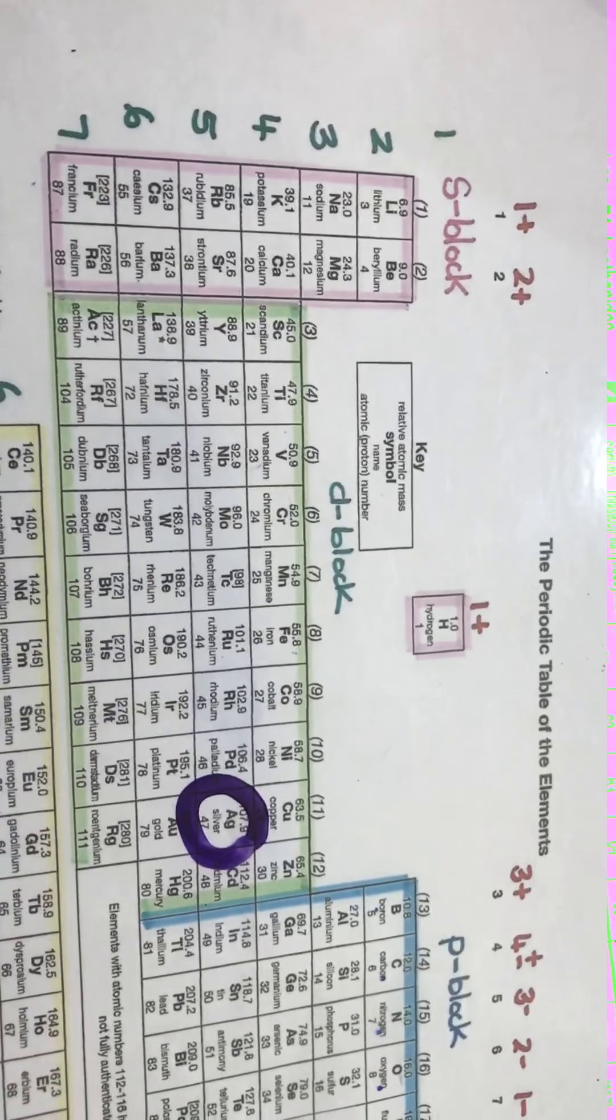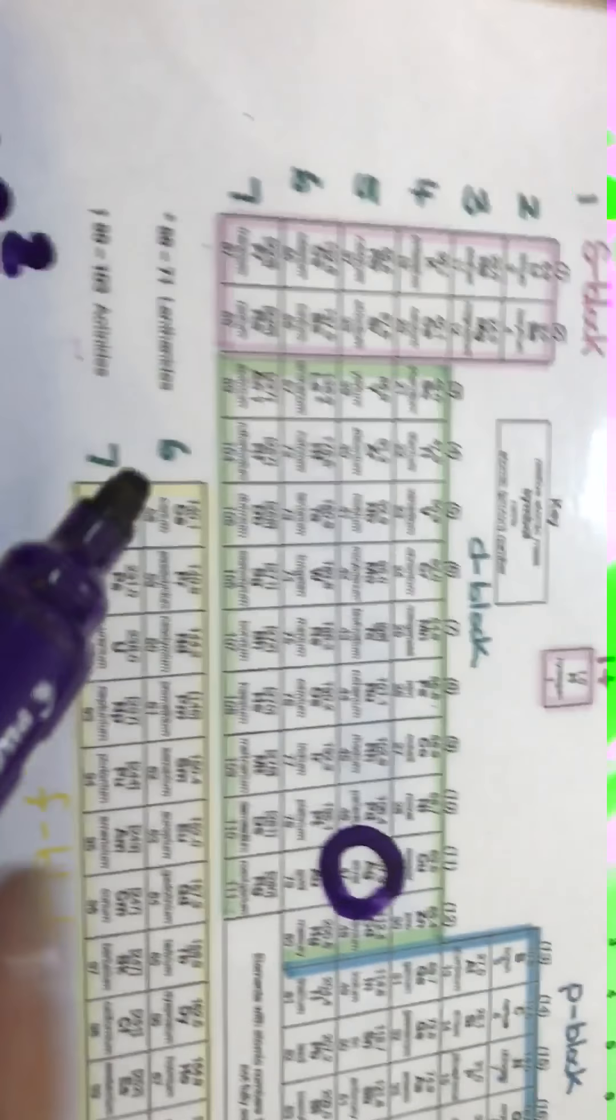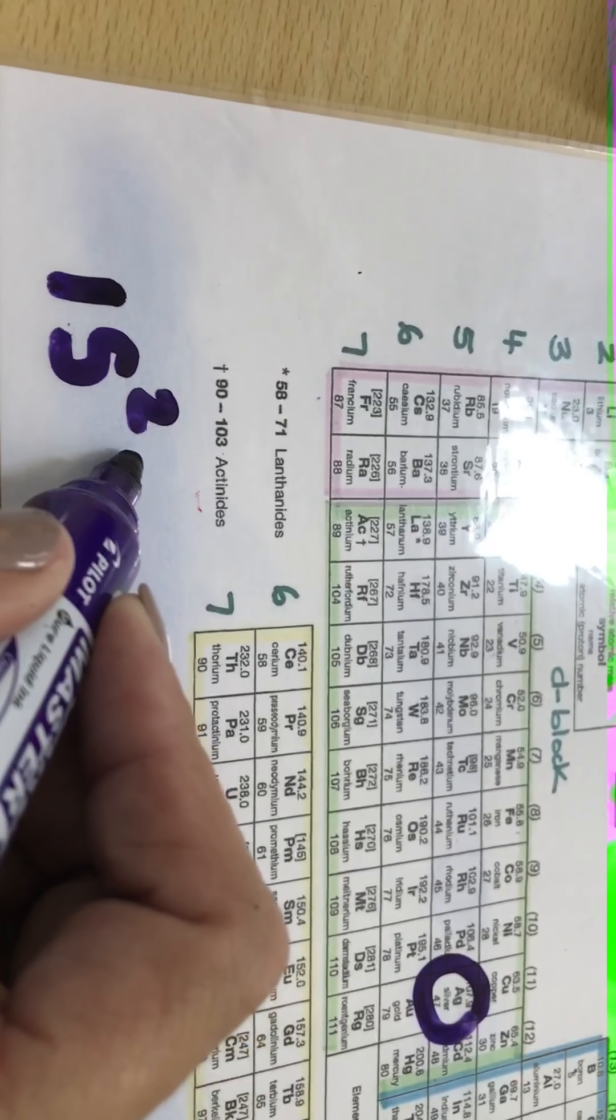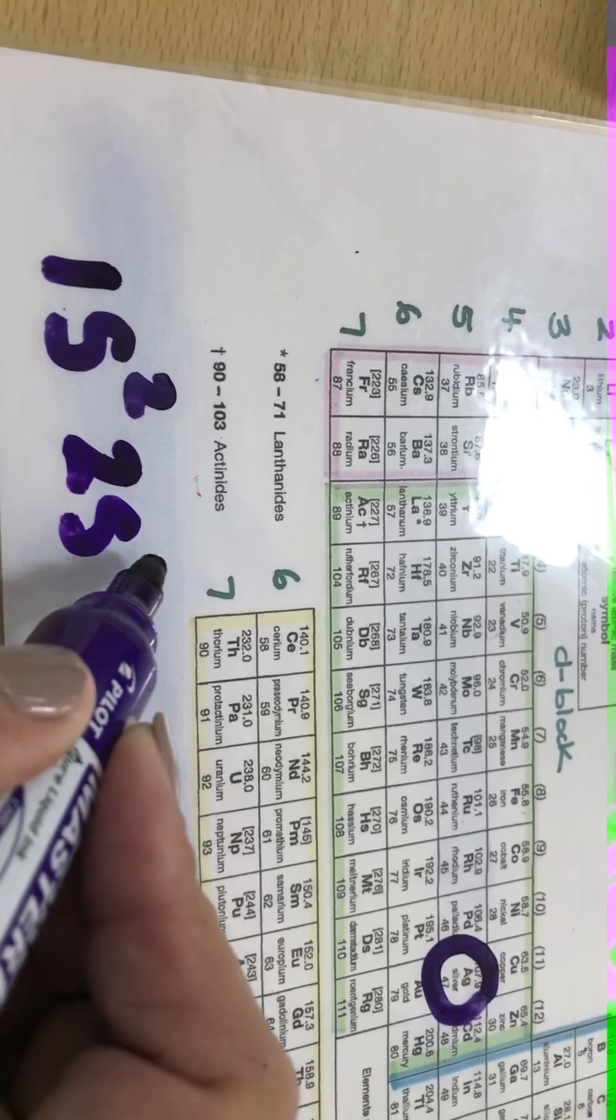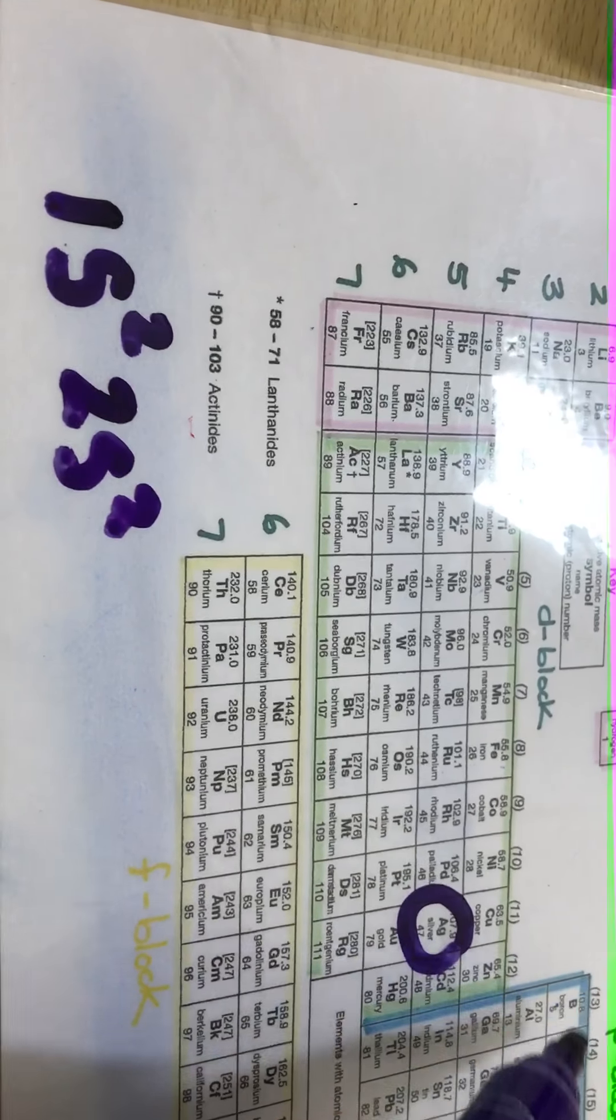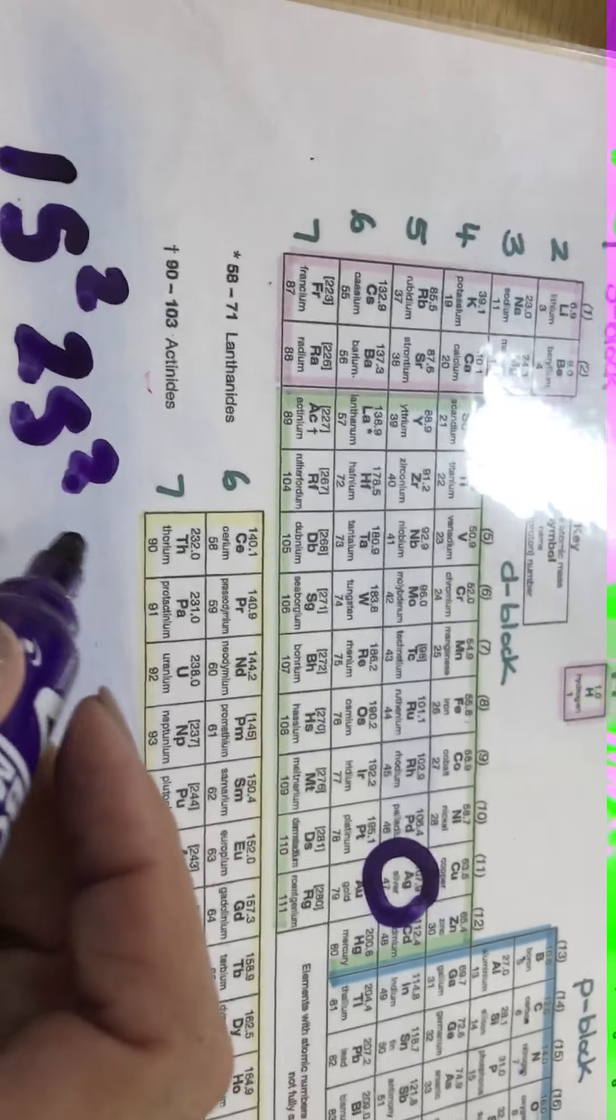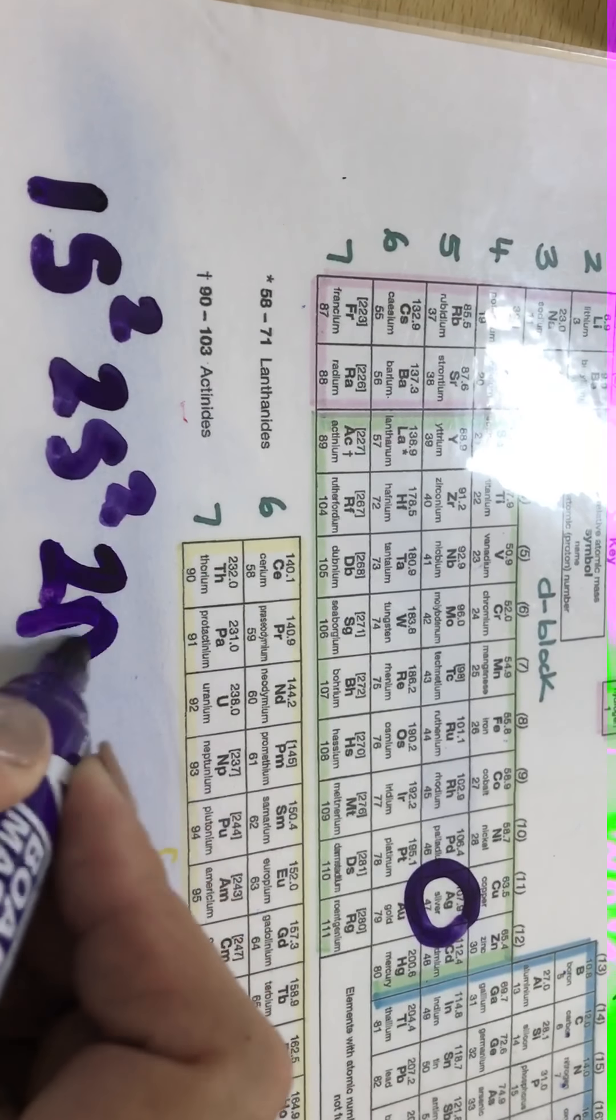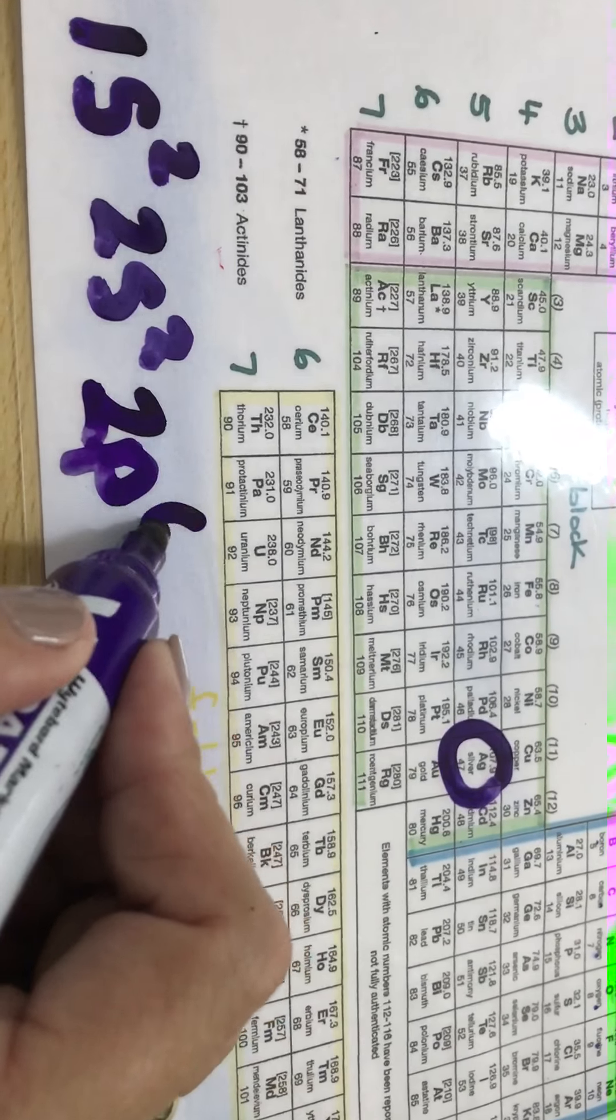Second, we'll have an s orbital with two electrons so that will be my 2s with two electrons. Then I will go over to my 2p, and 2p can take six electrons maximum, so I count off the six.